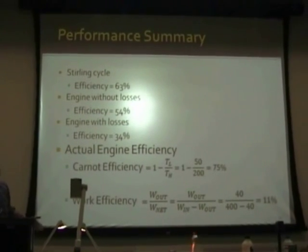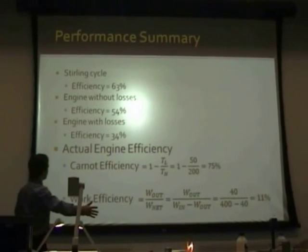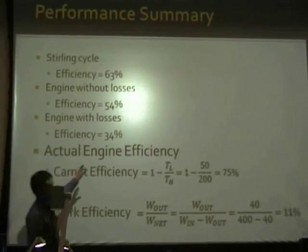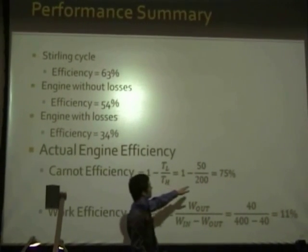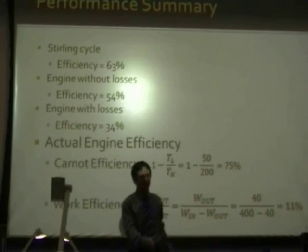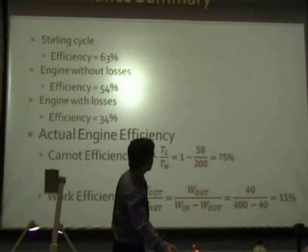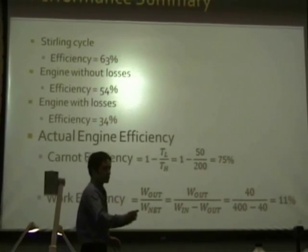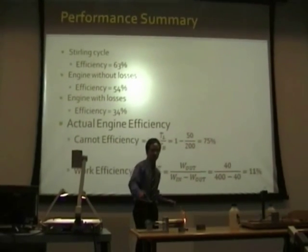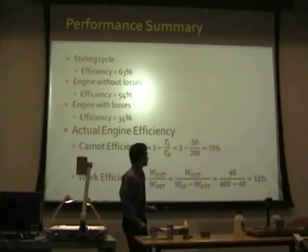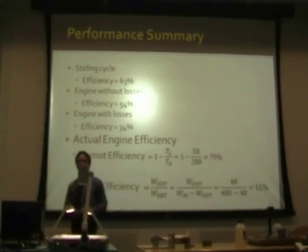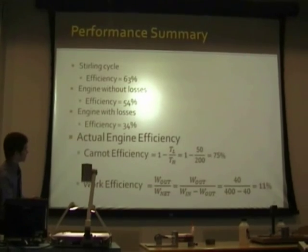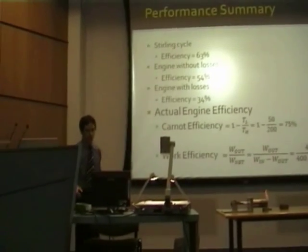This morning I did some actual physical testing of the engine. I measured the Carnot efficiency — with temperatures of 200°C at the high end and 50°C at the low end, equating to a Carnot efficiency of 75%. Putting in 400 watts, I was getting out 40 watts of mechanical rotation, equating to an engine efficiency of 11%, which is quite good considering the theoretical maximum achievable efficiency is 34%.